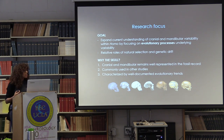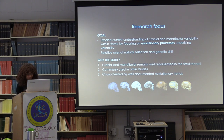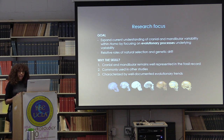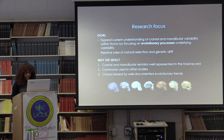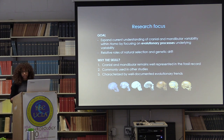Why the skull? For three main reasons. First, cranial and mandibular remains are well represented in the fossil record, allowing for a relatively large sample size. Second, the skull contains population-specific morphological patterns commonly used in investigations of variability. And lastly, the evolution of the Homo skull is characterized by a number of well-documented evolutionary trends, such as brain size increase and decrease and shifting adaptations relating to mastication. Therefore it has been at the core of many hypotheses relating to evolutionary change.